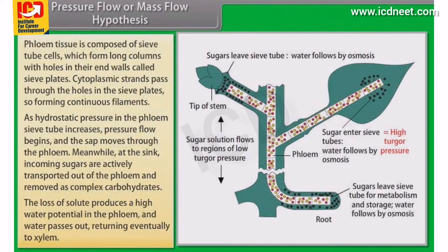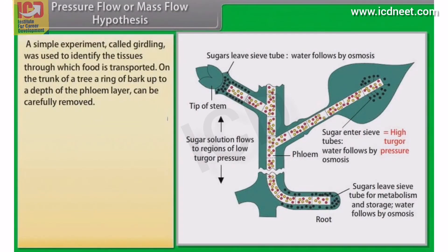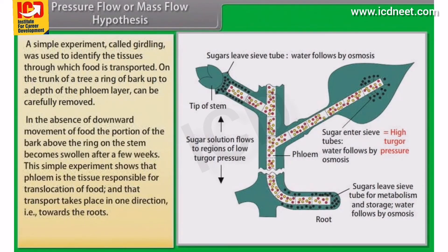Water returns eventually to the xylem. A simple experiment called girdling was carried out to identify the tissues through which food is transported. On the trunk of a tree, a ring of bark up to the depth of the phloem layer can be carefully removed. In the absence of downward movement of food, the portion of bark above the ring on the stem becomes swollen after a few weeks. This simple experiment shows that phloem is the tissue responsible for translocation of food, and that transport takes place in one direction — towards the roots.